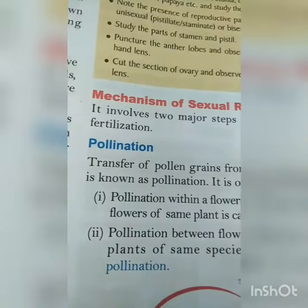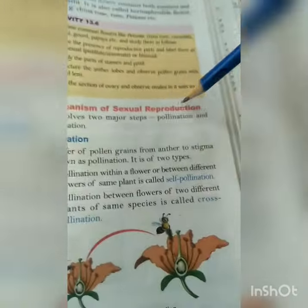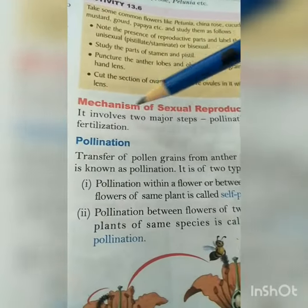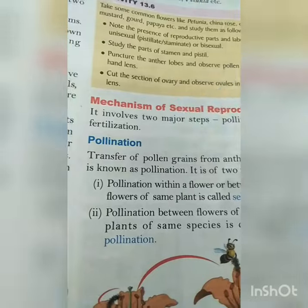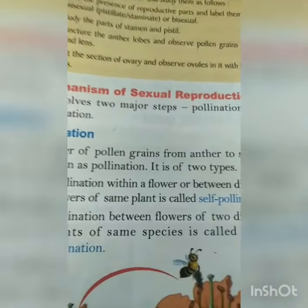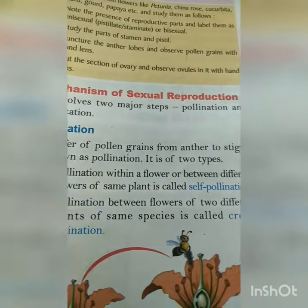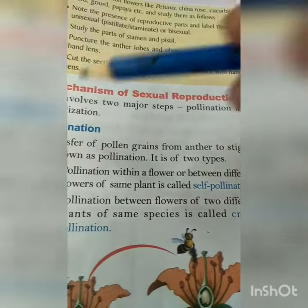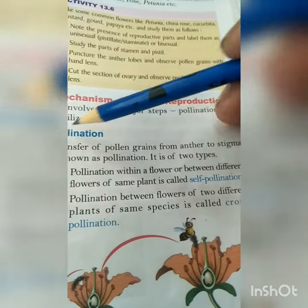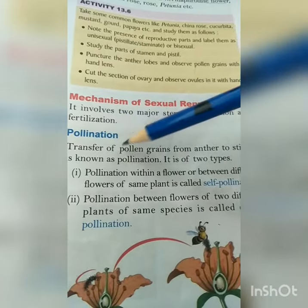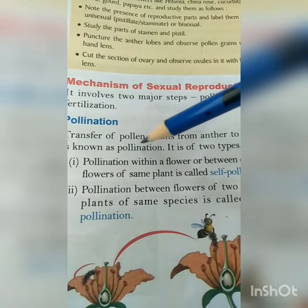Next is the mechanism of sexual reproduction. It involves two major steps: pollination and fertilization. Pollination is the transfer of pollen grains from the anther to the stigma.